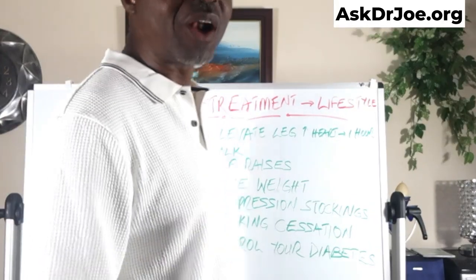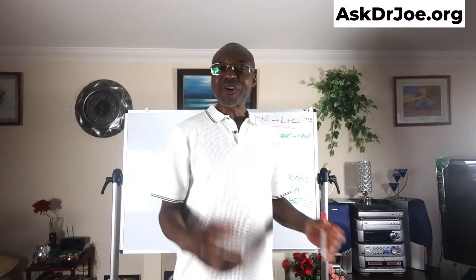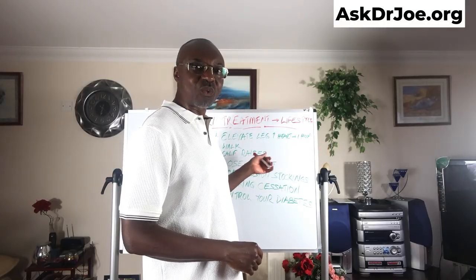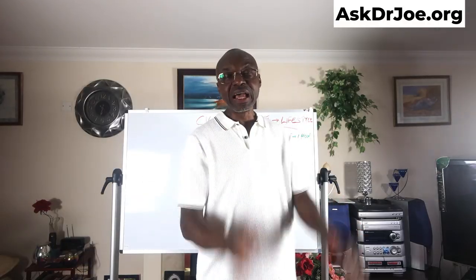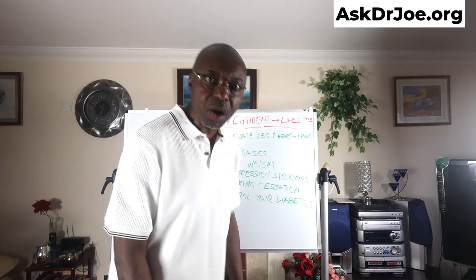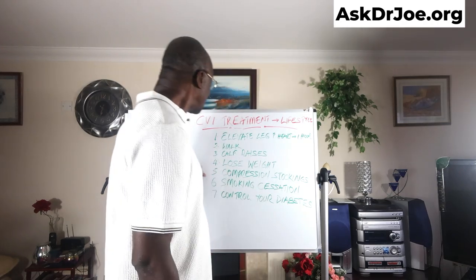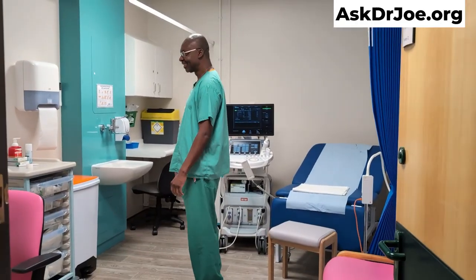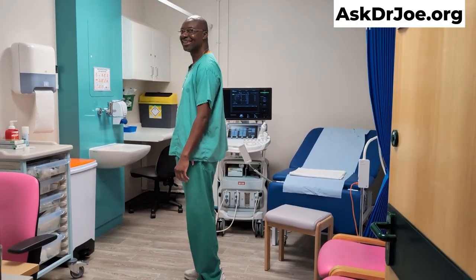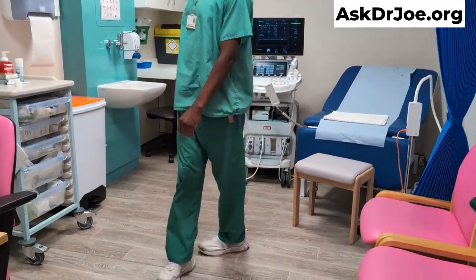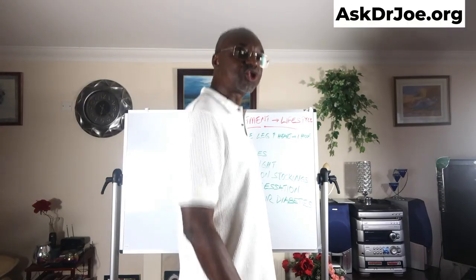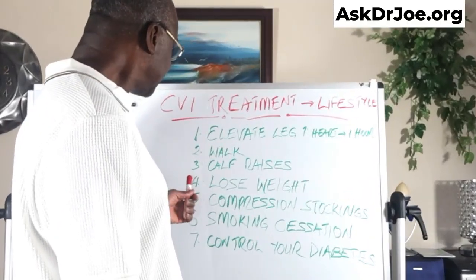Number two: walk. Walking is my favorite exercise — it's underrated but it works here. When you walk, the muscles of the leg help with a pumping action to get venous return, for the blood to return back to the heart. Number three: calf raises. Same thing — when you do calf raises, it induces a pumping action that encourages the return of blood to the heart through the veins.